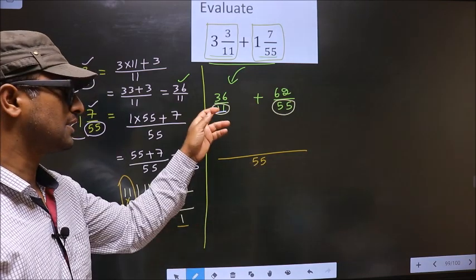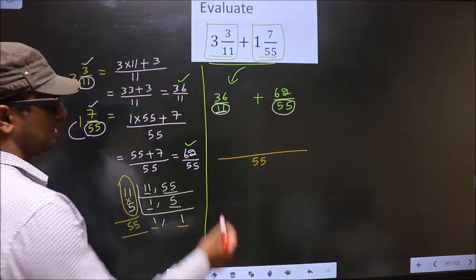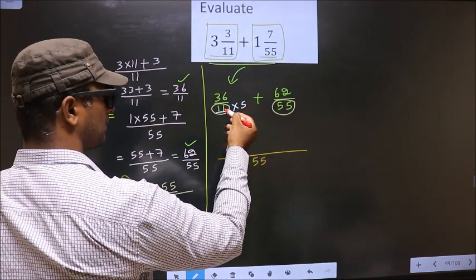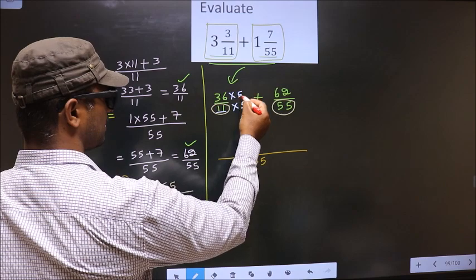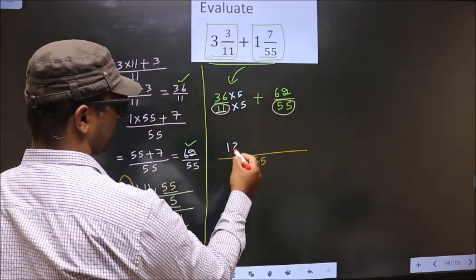Now, 11 should change to 55. For that to happen, we should multiply this by 5. Whatever number you are multiplying in the denominator, the numerator also you should multiply by the same number. So, 36 into 5 is 180.